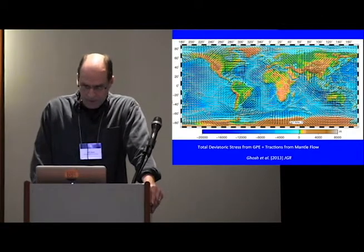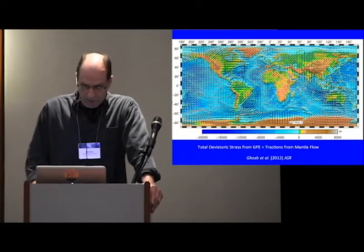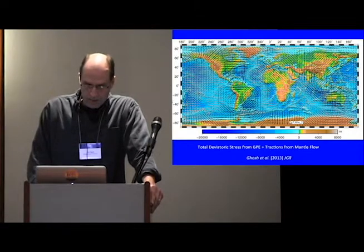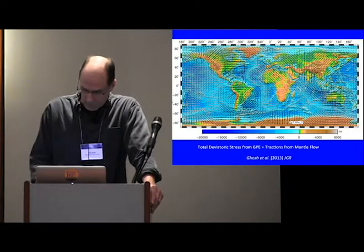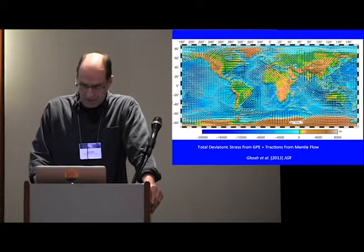The red vector is the predicted velocity field from the global model in a no-net rotation frame. The blue vector is a kinematic model from Kramer et al. And we obtained a RMS velocity misfit of about 1 centimeter per year for our best models.